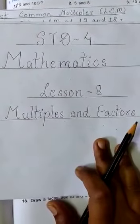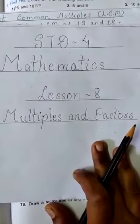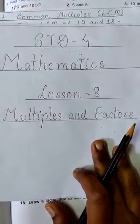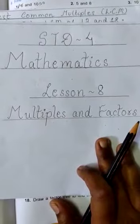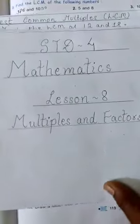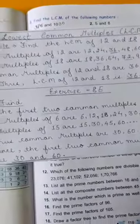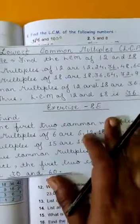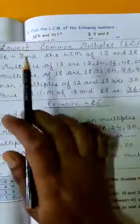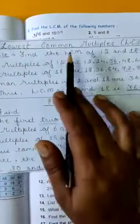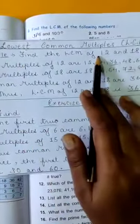Children, in Mathematics of Standard 4, Lesson No. 8, Multiples and Factors, we have done till HCF or Highest Common Factor. Now we will do LCM. LCM means the Lowest Common Multiple.